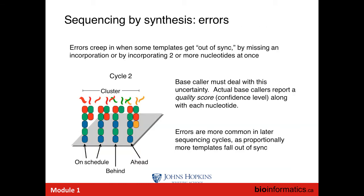It's really important to understand how sequencing errors occur. The dominant mode of errors in Illumina sequencing are substitution errors, where the base caller predicted the wrong identity of a base. These are caused by the fragments or templates within a cluster getting out of sync. We have this bundle of DNA molecules all sequencing at the same time, and what can happen is if the blocking groups either aren't present on the nucleotide or don't get cleaved off, some molecules in the cluster will lag behind and some will jump ahead.